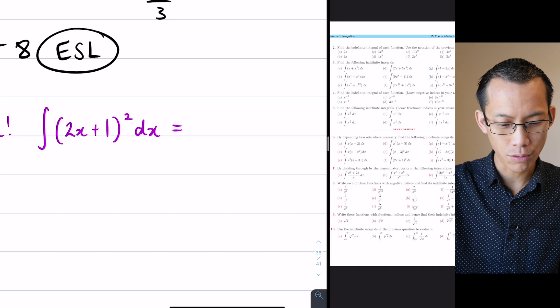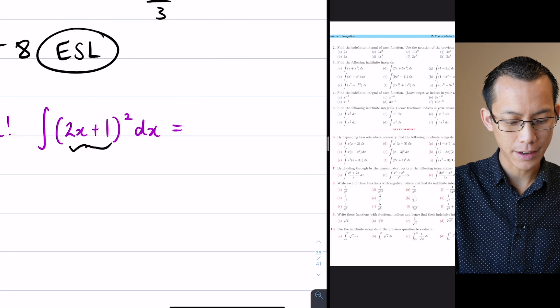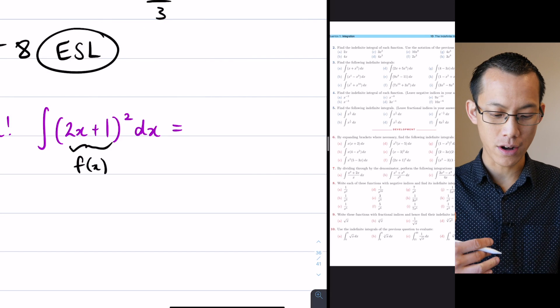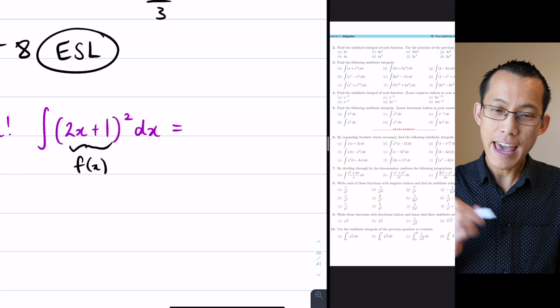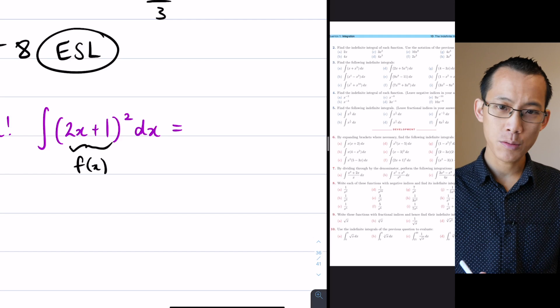You've got this – if we call this guy in here f(x), and it's being raised to the power of 2. The f'(x) that would come from chain rule, your inside derivative, in this case it would just be a number 2.